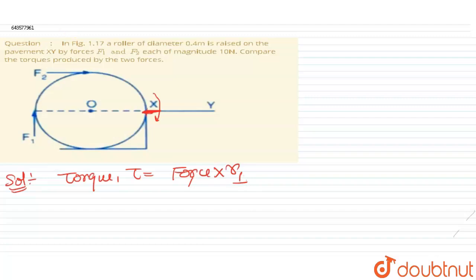So first of all, we will calculate torque for force F1. That will be tau 1. It will be force, that is 10 newton, into the perpendicular distance. The point of application of the force is this and the axis of rotation is this. So the perpendicular distance will be the diameter of the ruler that is 0.4 meters.